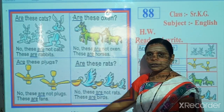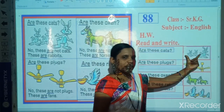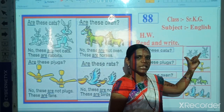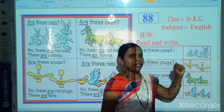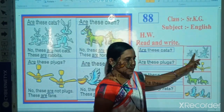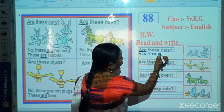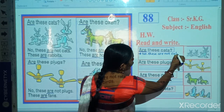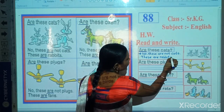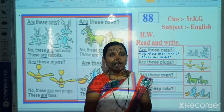Students, this is your class for today. Your today's homework is to read and write. First look at the picture, then read the question, and then write the answer. Now look here — which picture is this? Correct. This is the picture of rabbits. Now read the question: Are these cats? No, these are not cats. These are rabbits. Solve all questions in your four-line notebook at home.